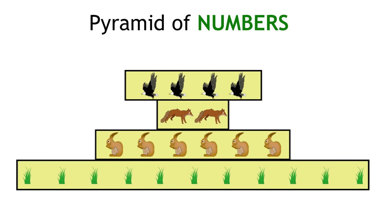As you can see in this example, thousands of blades of grass are eaten by lots of rabbits. That then feeds very few foxes. These foxes will then feed a larger number of eagles. The more organisms there are, the wider the bar is.